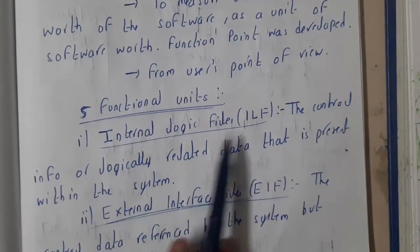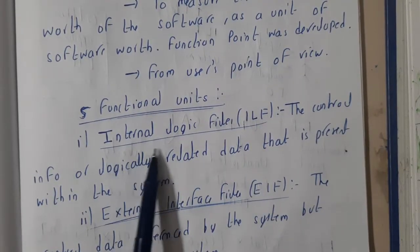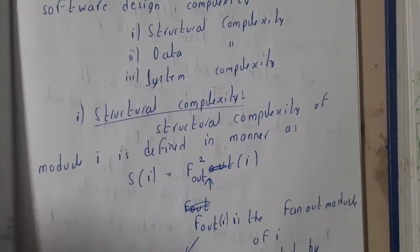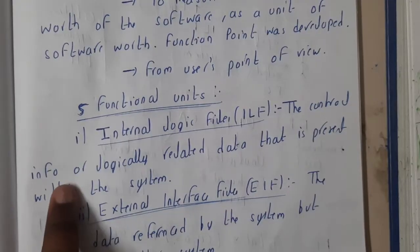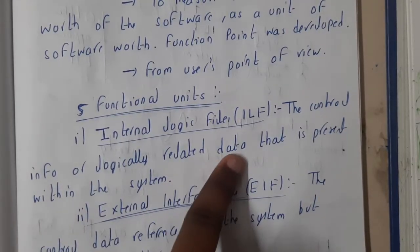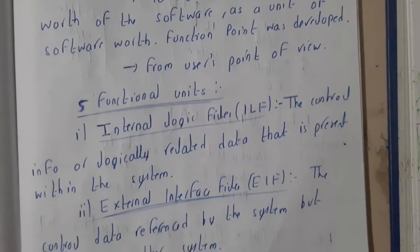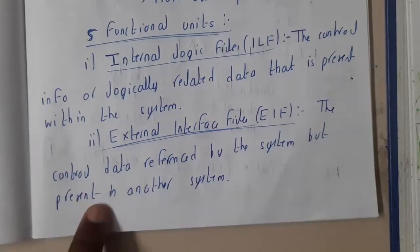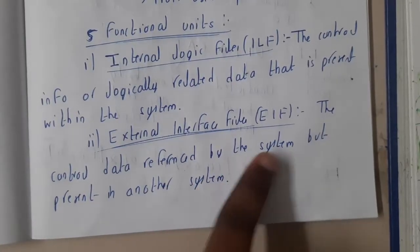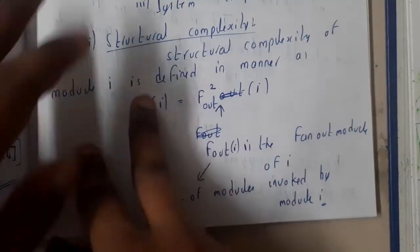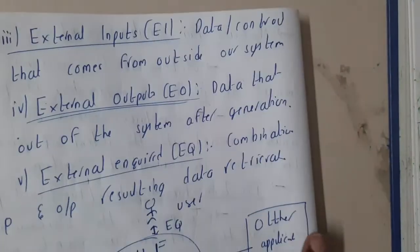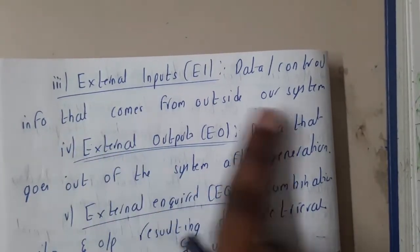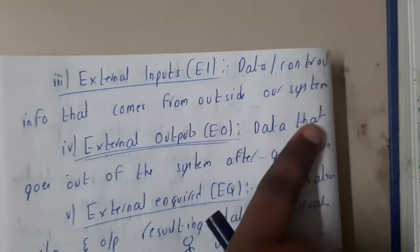The five functional units are: first, ILF — that is nothing but Internal Logic Files. Internal Logic Files are used for the control information or logically related data that is present within the system. We also have EIF — that is nothing but External Interface Files. These control the references by the system but are present in another system, that is, outside the system.